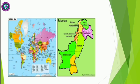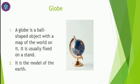Here with the other picture is about the map of Pakistan. You can easily see the provinces of Pakistan like Balochistan, Punjab, KPK, Gilgit-Baltistan, and Sindh. So these are the maps. Now another topic is about the globe.